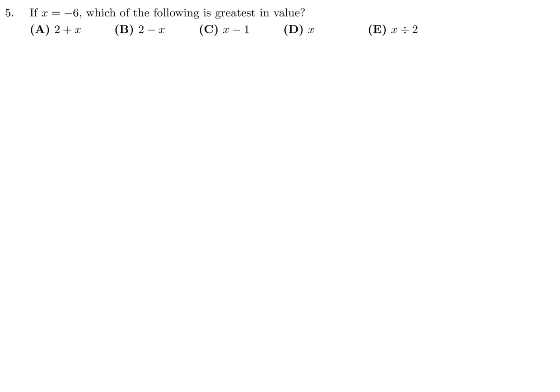If X is negative 6, which of the following is greatest in value? Let's calculate this. For the first one, it would be 2 plus negative 6, which is negative 4. The next one, 2 minus X, would be 2 minus negative 6, and that is 8. For the next one, it would be negative 7. This is just negative 6, and this is negative 3. So of these, the greatest is 8. That would be choice B for number 5.